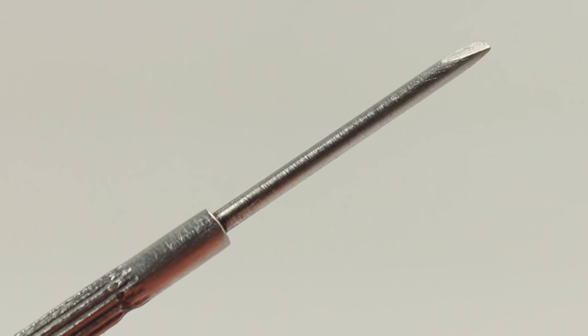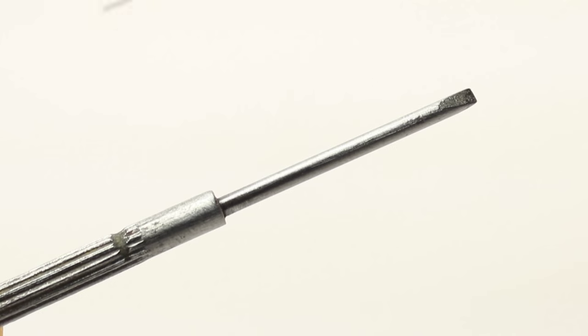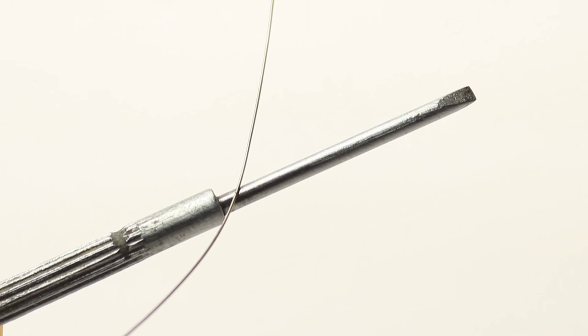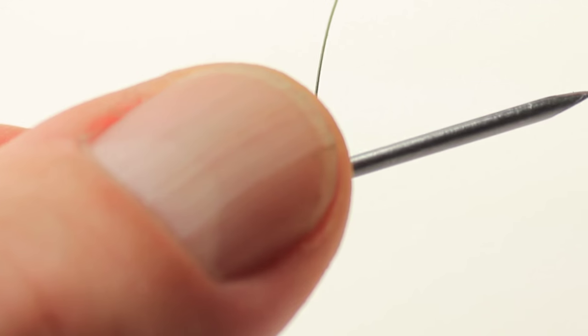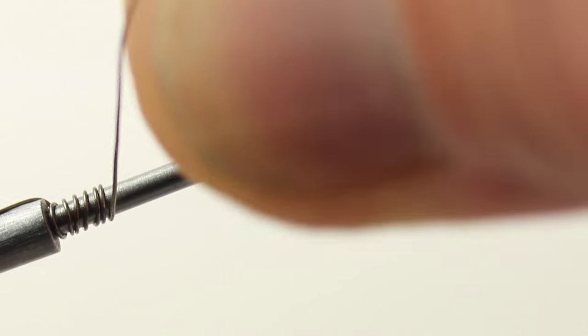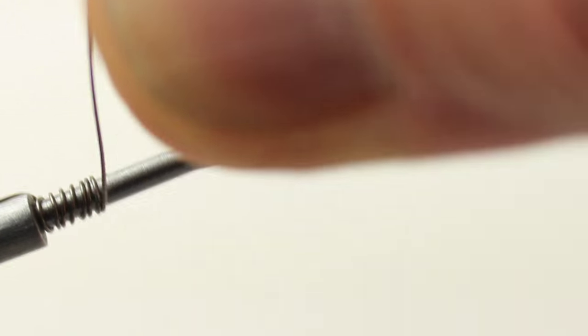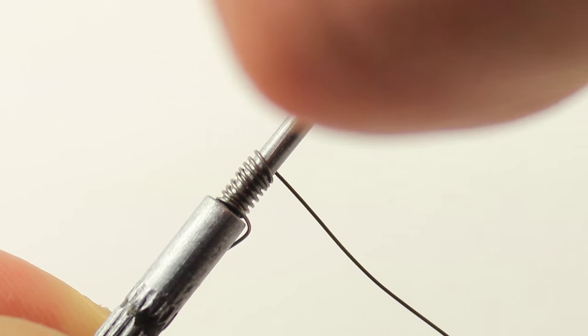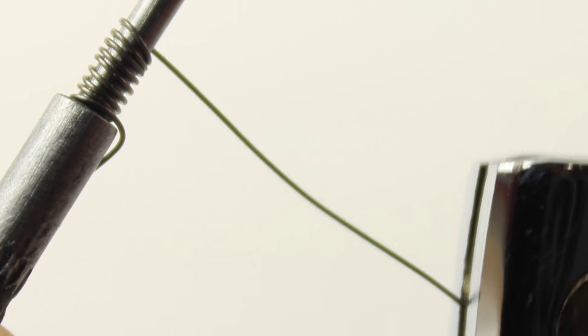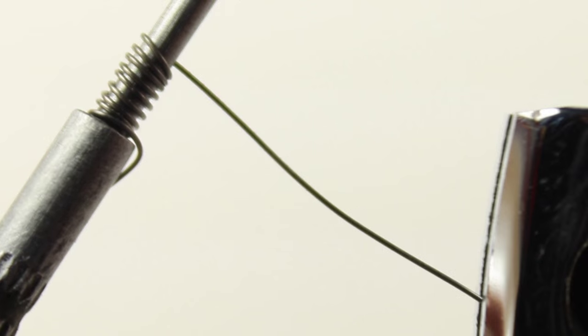Currently I wrap coils around the screwdriver using Kanthal wire. Start by placing a small lead up against the screwdriver. Slowly and as tightly as possible, wrap around eight to ten times. Push the coil to tighten the gaps. Snip the wire with a sterile pair of toenail clippers.